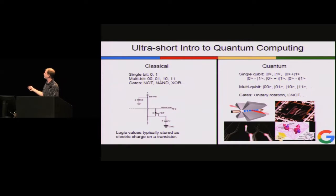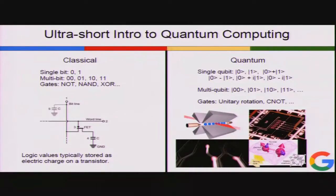In quantum computing, we put funny brackets on the 0 and 1. For a single qubit we have states like 0 plus 1, 0 minus 1, 0 plus i1, 0 minus i1. And just like classical computing you can have multi-qubit states, with exponentially many basis states as you increase the number of bits. No one's built one of these yet, so nobody has decided whether to use vacuum tubes or transistors. There are four different implementations people think are best — we're building the superconducting one.